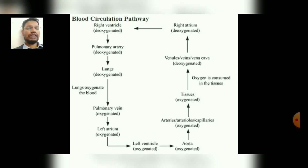These arteries, arterioles, and capillaries carry blood from the aorta to the targeted tissues which require oxygen. The oxygen is consumed in the tissue, and after consumption, the blood ultimately reaches the venules, small veins, and the vena cava — and the blood present is now deoxygenated, as it has already been utilized by the tissues.